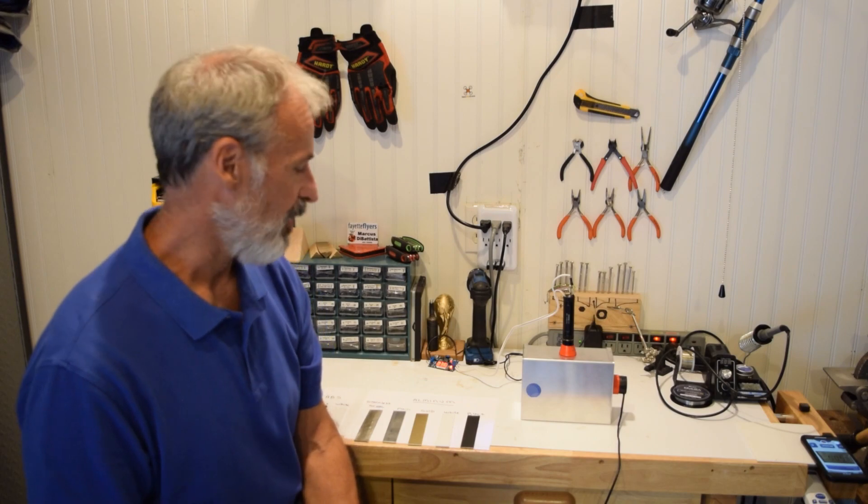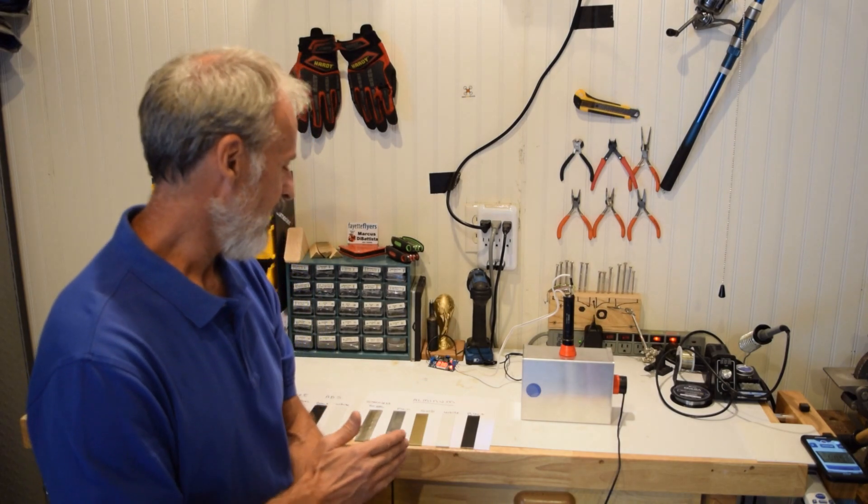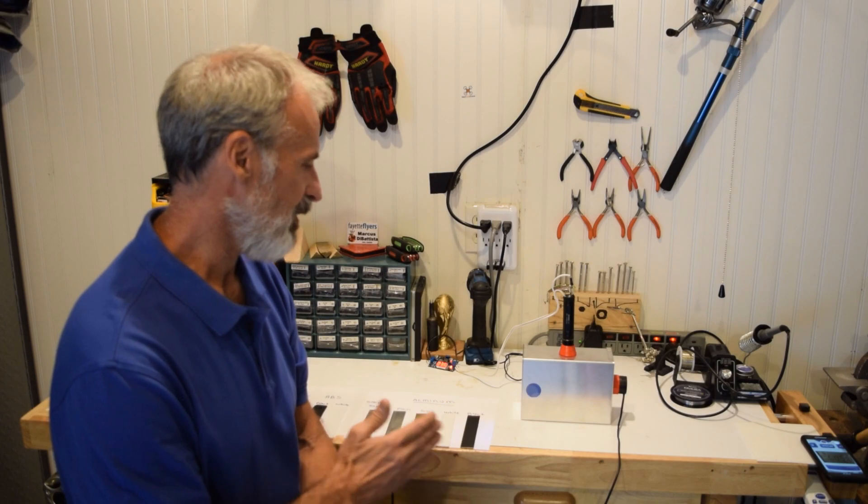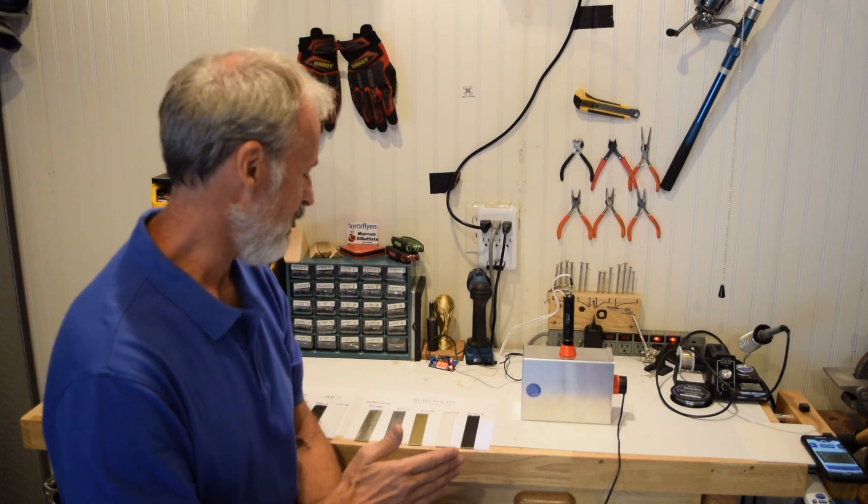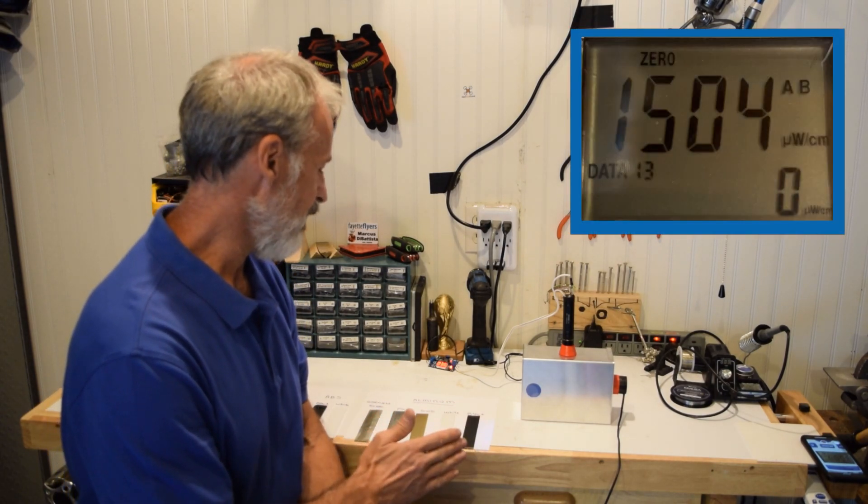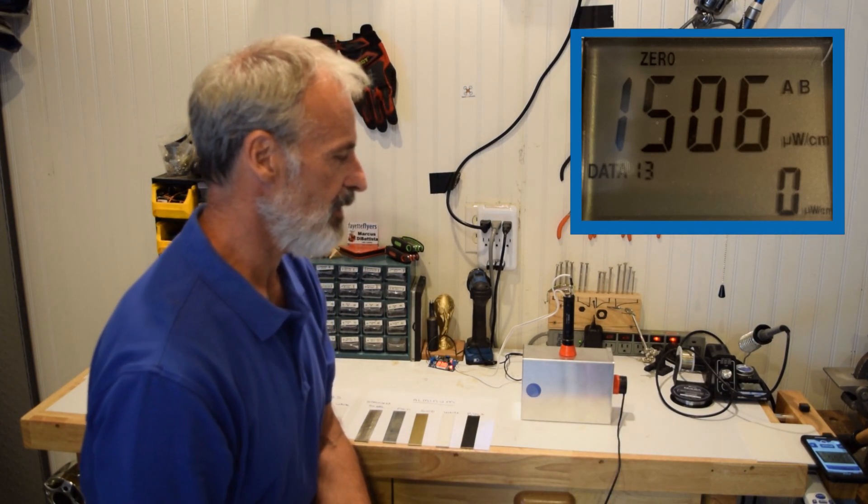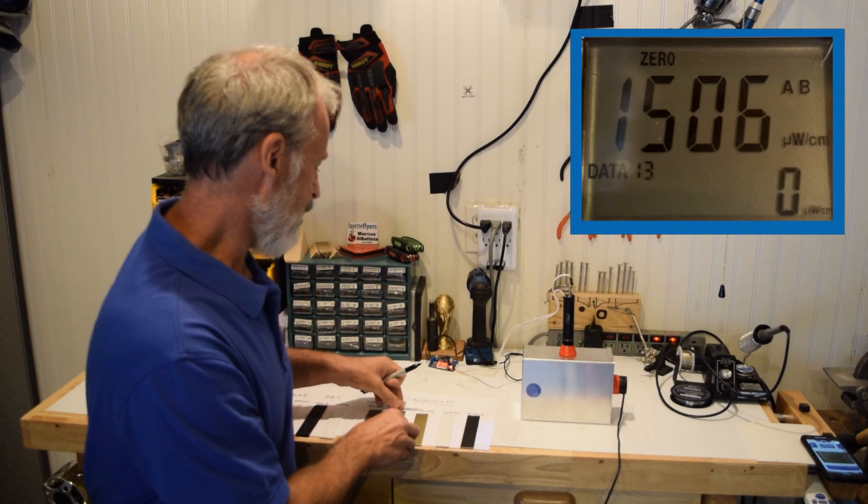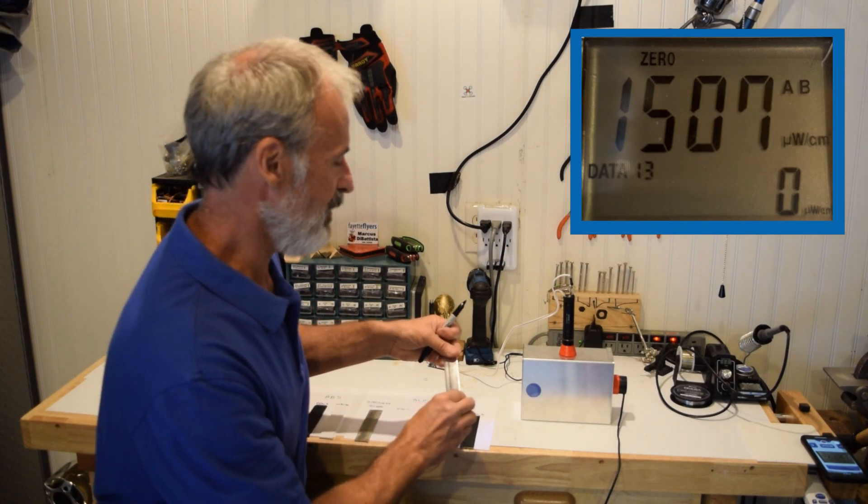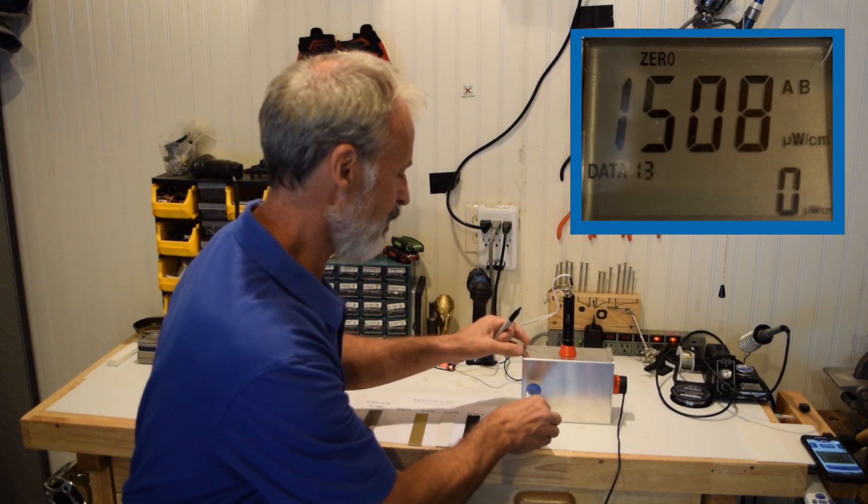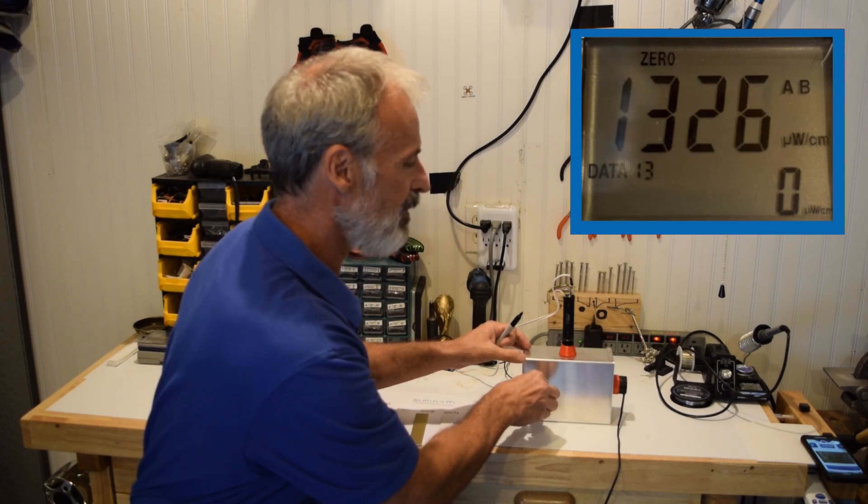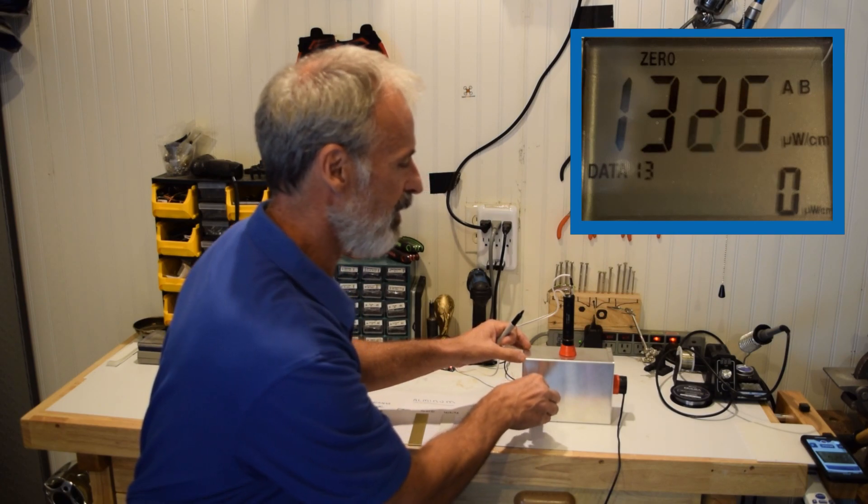First we're going to start with the opaque materials to show the effect of painting and how much absorption you're getting of these different materials. We'll start with the aluminum first. As you can see, we're getting about 1,500 microwatts per square centimeter of energy in the box. We'll slide it all the way to the back. You can see with aluminum, it drops to about 1,325.